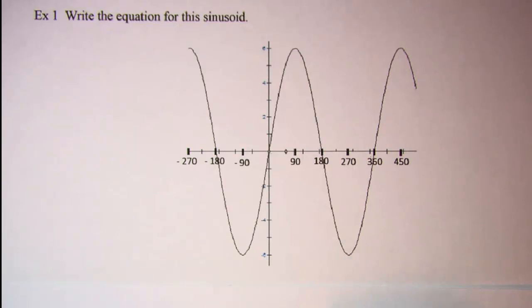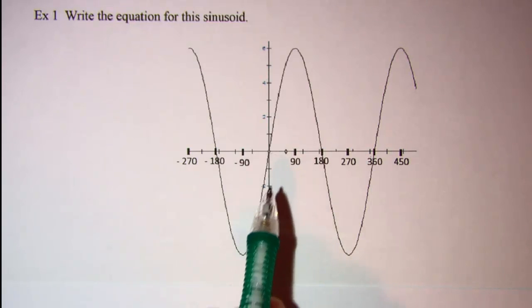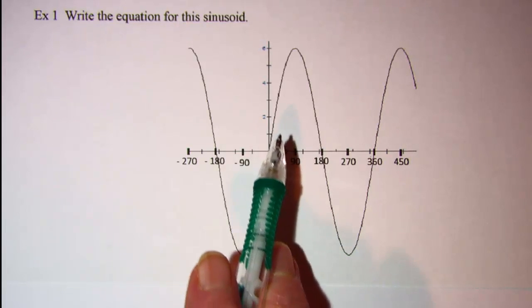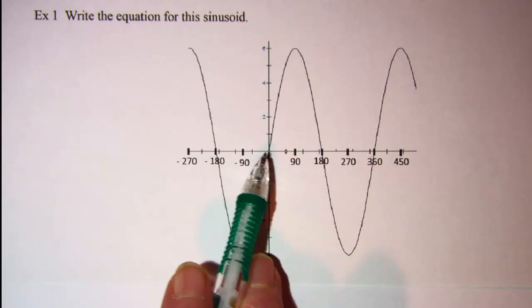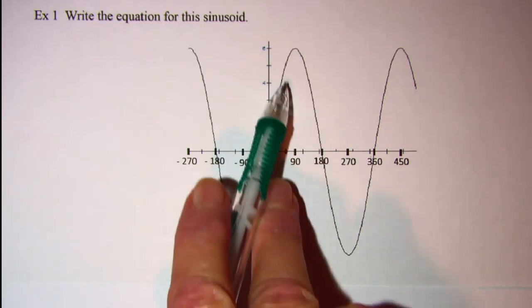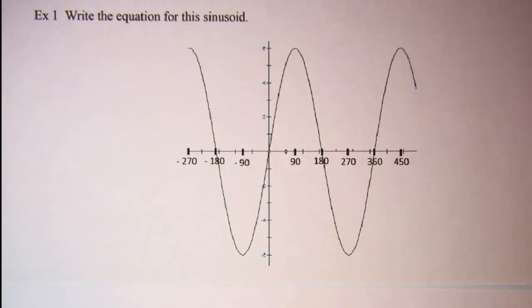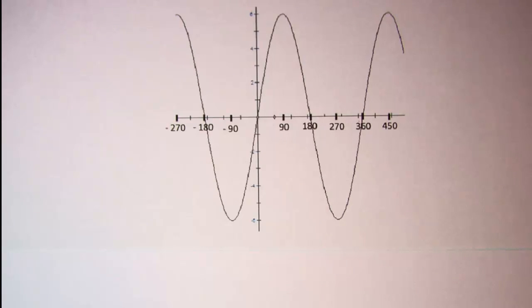The only thing that we've done is we've changed the amplitude. So since it heads up from the origin that means it's a sine curve, and the amplitude is 6, so our equation for this curve is y equals 6 sine x.